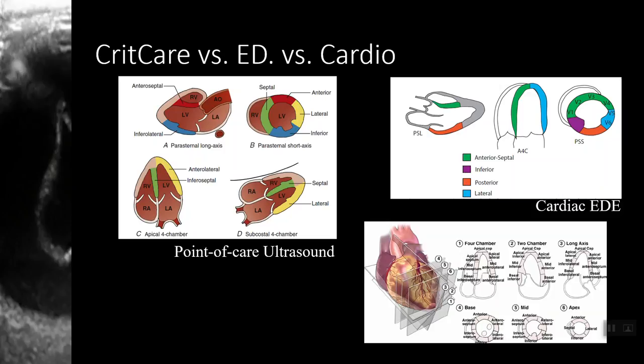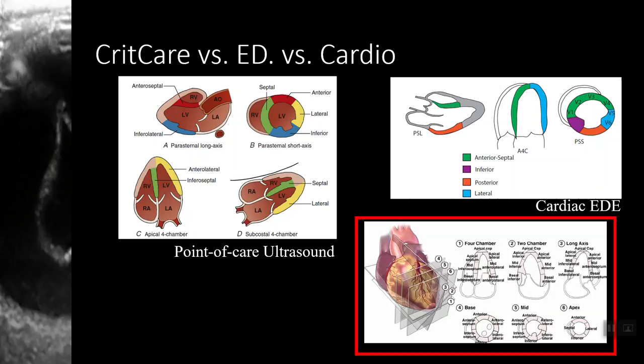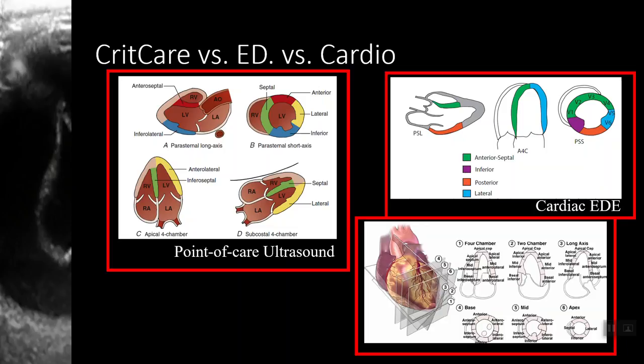Every specialty has a different way of naming cardiac regions. Traditional echocardiography divides the heart into 17 segments, which is way more than we need for a point of care evaluation. Emergency medicine literature tends to divide the heart into four segments following traditional ECG territories: anteroseptal, inferior, posterior, and lateral. Critical care literature also divides the heart into four segments using the terminology of septal, anterior, lateral, and inferior. Today we will use the critical care nomenclature, but choose whichever is easy for you to remember and stick with it.